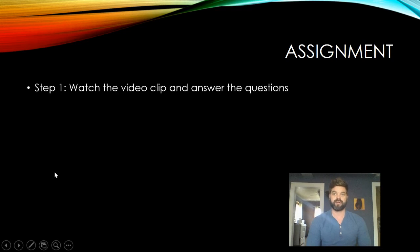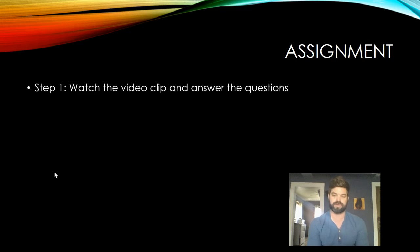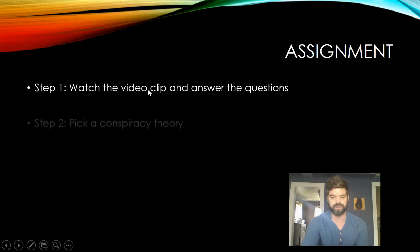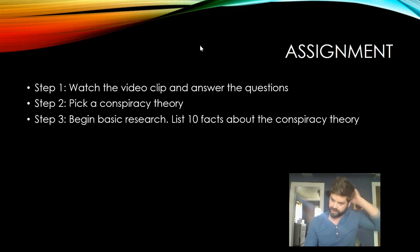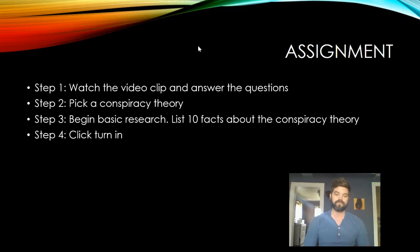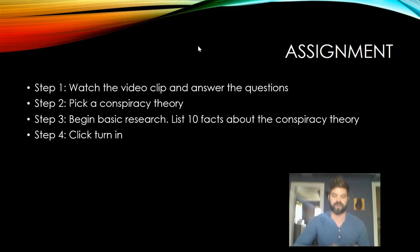Assignment — this is day one's assignment. You have today and tomorrow; this is due Tuesday at midnight. Step one: watch the video clip and answer the questions. It's a short four-minute clip that goes over why conspiracy theories and kind of the basis of them are misguided — but you'll see, just watch the video. Step two: pick one of the theories from the above list and begin basic research — find 10 facts about the conspiracy theory, just real basic. This first assignment is just for you to jump right into it and get your fingers into the research. Step three: turn it in — type it right into the Google Doc that's provided to you. Pick a theory and find some facts, whether they discredit it or back it up.